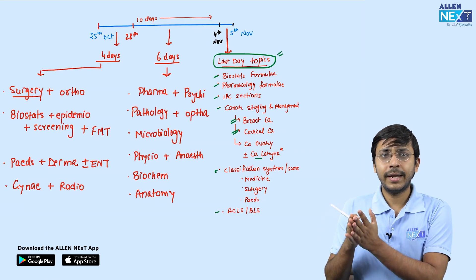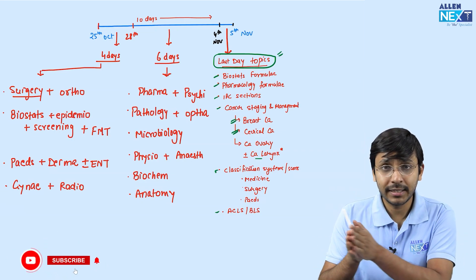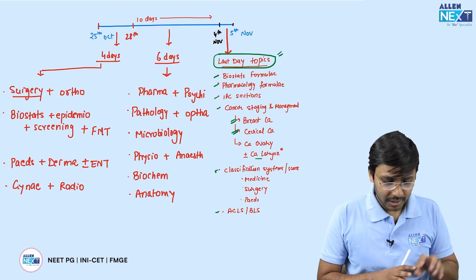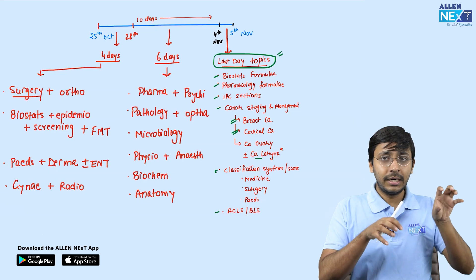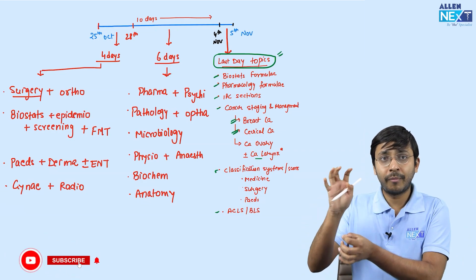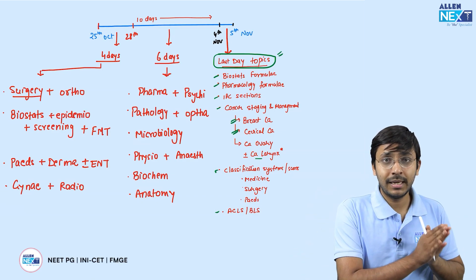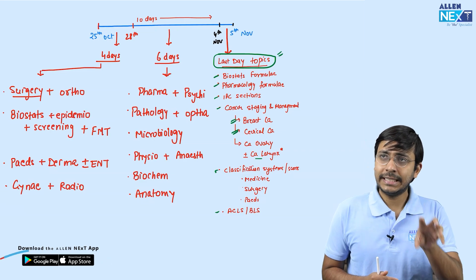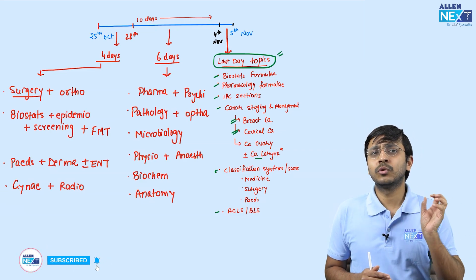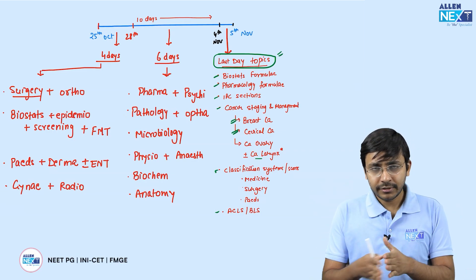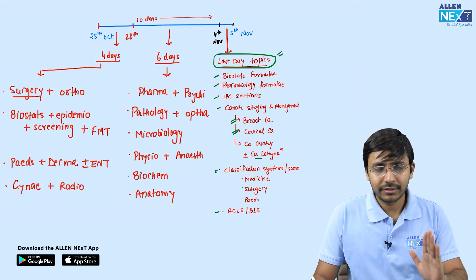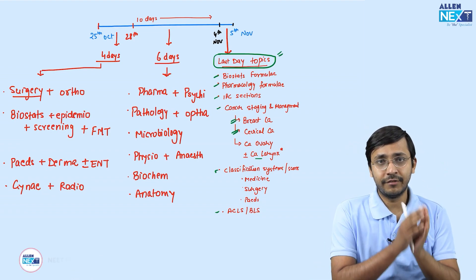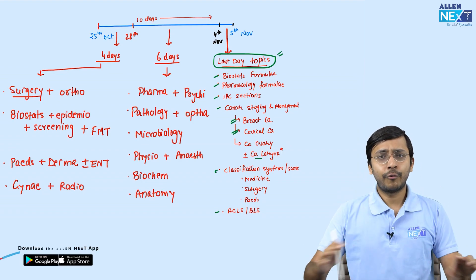Pediatrics I consider a minor subject. The majority of isolated Pediatrics questions come from General Peds and Neonatology — Systemic Peds only has specific topics you need to cover. Integrate Pediatrics with Dermatology images. We've done a series on the top 50 Derma images which covers a lot of INICET Derma questions. Regarding ENT — only three to four questions come from it in INICET, so if you haven't touched ENT yet, it's okay to skip it.